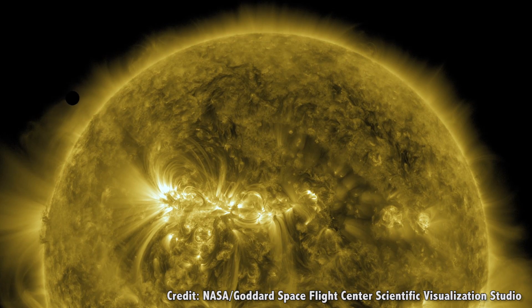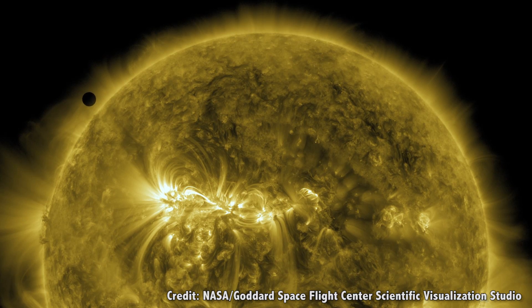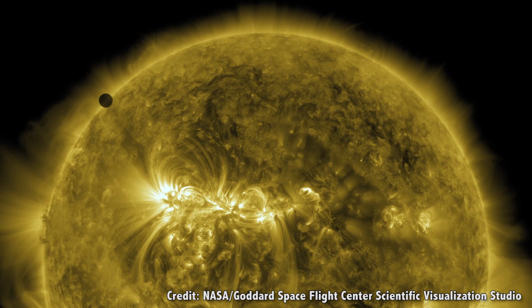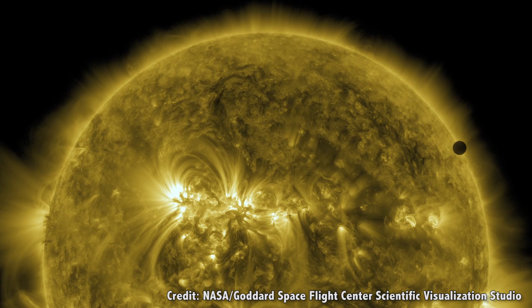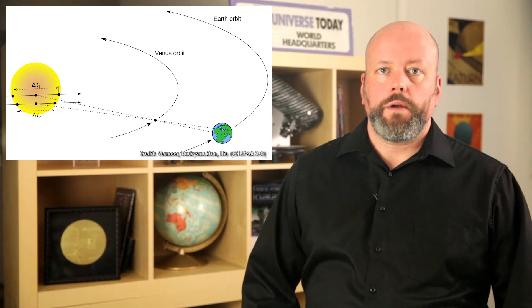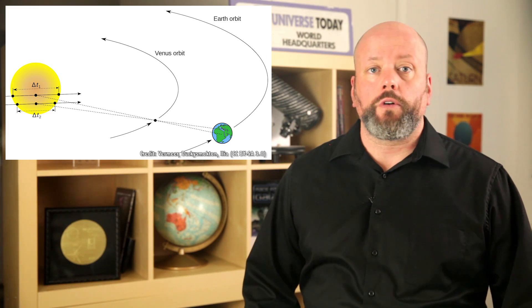All of the observers made four observations. When Venus was touching the edge of the Sun. When it was fully inside, when it had touched the other side, and when it was fully out.